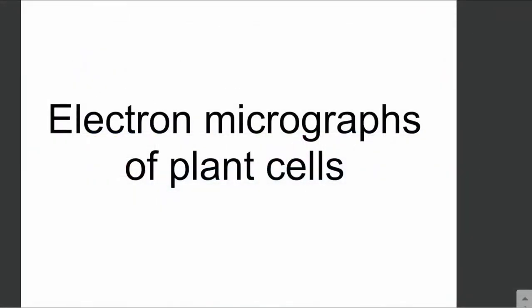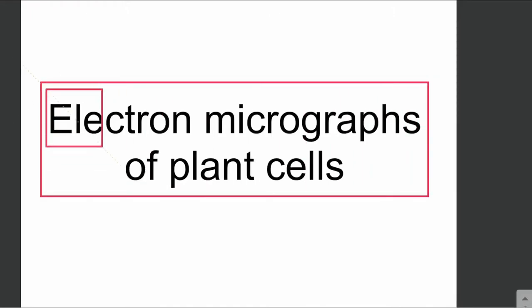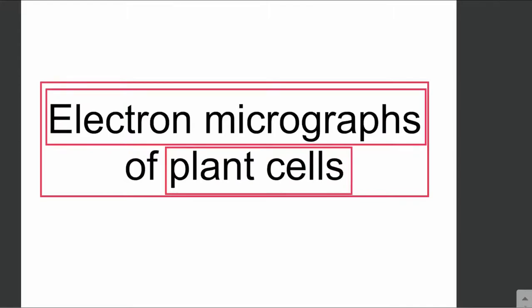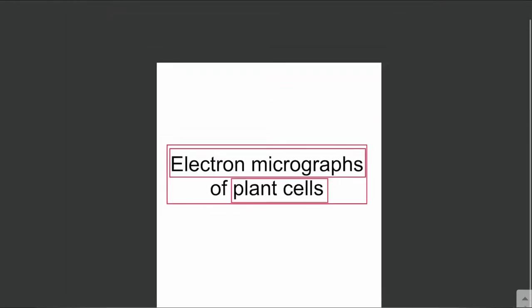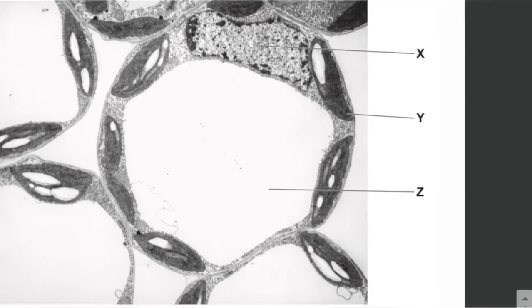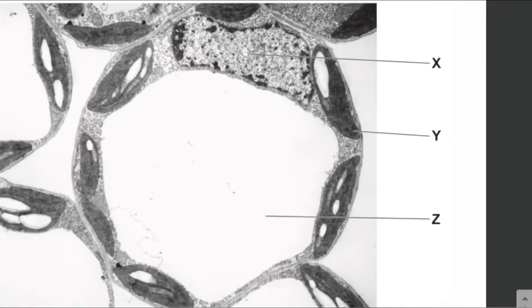Assalamu alaikum everyone. In this video lecture we will be discussing the electron micrographs of plant cells. Electron micrographs are basically pictures taken from the electron microscope. In front of us is a picture of some plant cells taken from the electron microscope — this is basically an electron micrograph. Let's label the different structures that we can see.